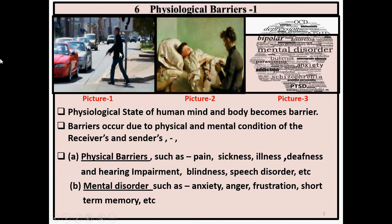In the first picture you see a blind man — this is his stick. Because of his blindness he cannot communicate well, that means blindness became a barrier in communication. In picture two, a person is on bed and he is ill. Because of his illness he cannot communicate well.